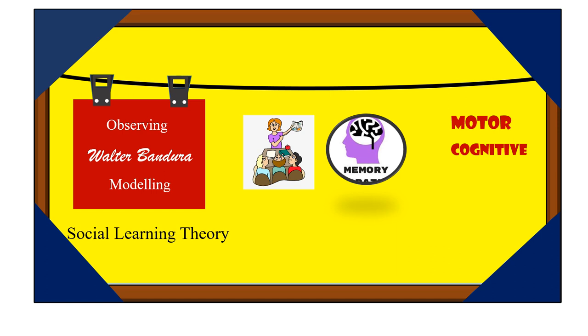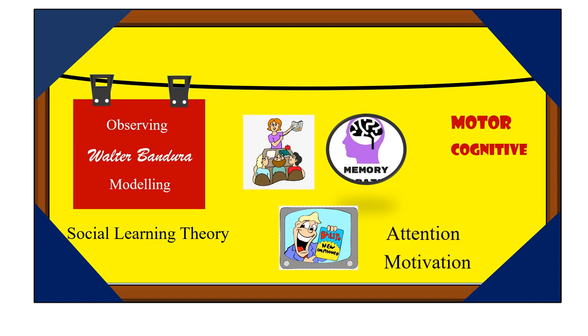Among the most common and pervasive examples of social learning situations are television advertisements. Advertisements suggest that drinking a certain beverage or using particular hair shampoo will make us popular and win the admiration of attractive people. Depending upon the component processes involved such as attention or motivation, we may model the behavior shown in the advert and buy the product being advertised.